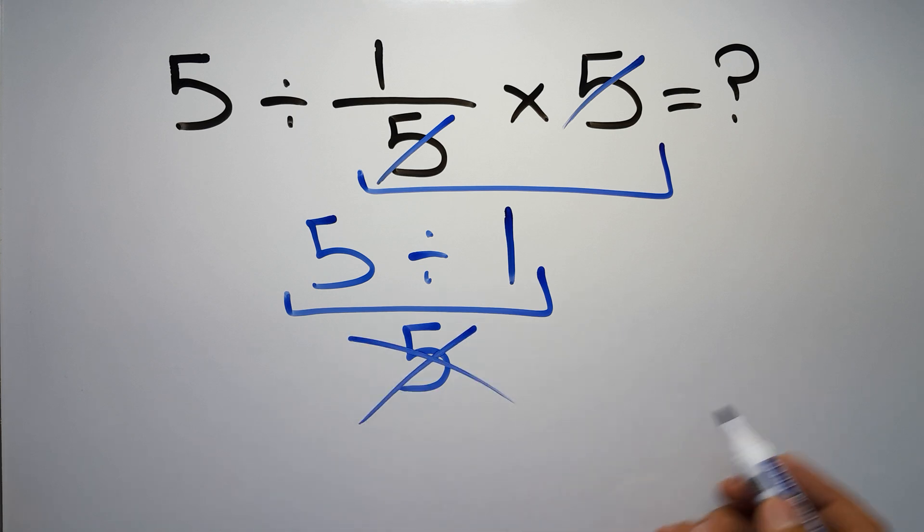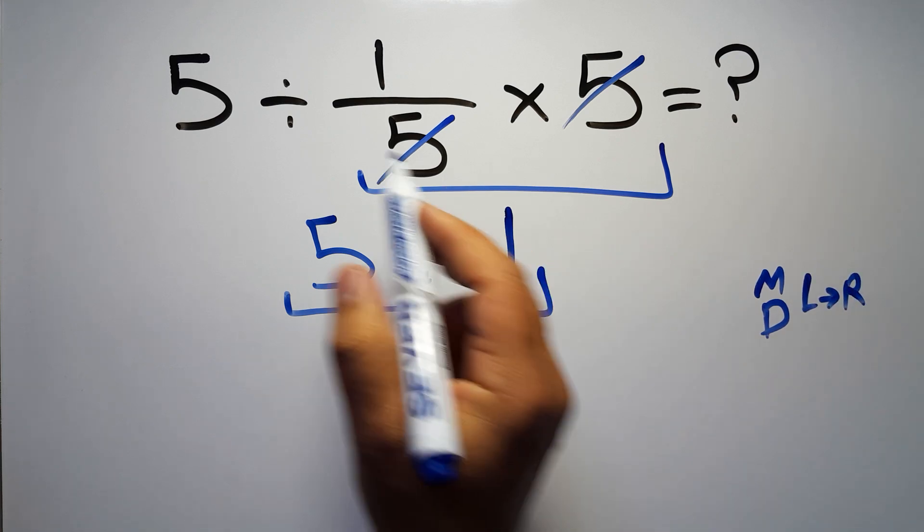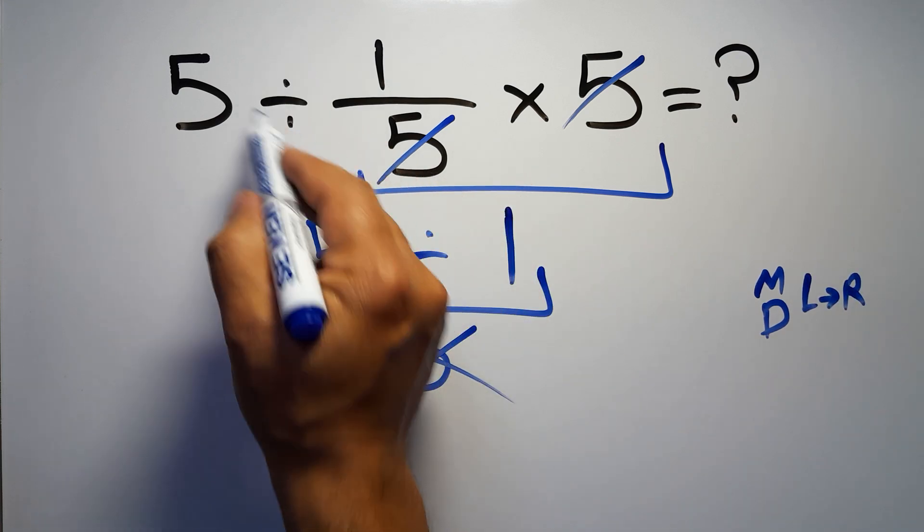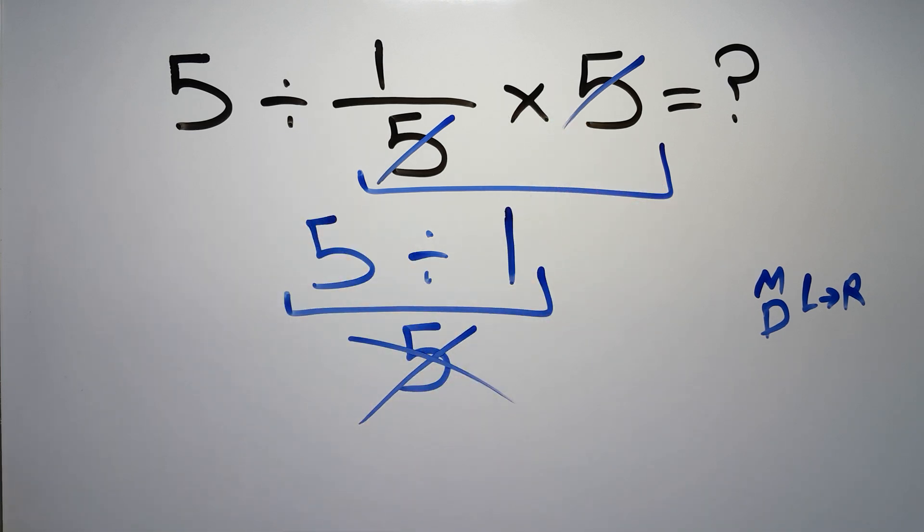according to the order of operations, multiplication and division have equal priority and we have to work from left to right. So here first we have to do this division, then this multiplication. If we do this multiplication before this division, it is wrong.